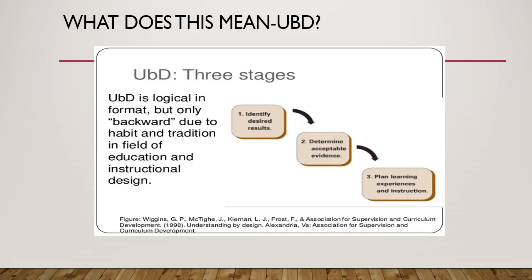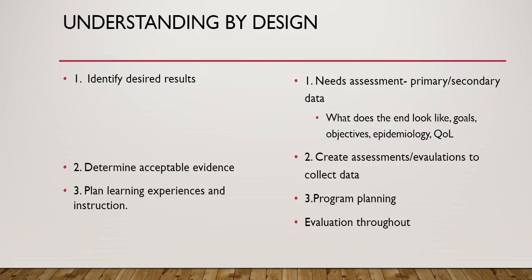The next model is called UBD, or Understanding by Design. Understanding by Design is logical because it helps you plan backwards to the beginning. The first thing you do is identify desired results. Then you determine what is acceptable evidence to prove that your program was successful, and then you plan your learning experiences and instruction. In relation to the steps of planning a program, identifying your desired results means working on your needs assessment, collecting primary and secondary data, and defining what the end looks like — your goals and objectives, the epidemiology and quality of life from the PRECEDE-PROCEED model.